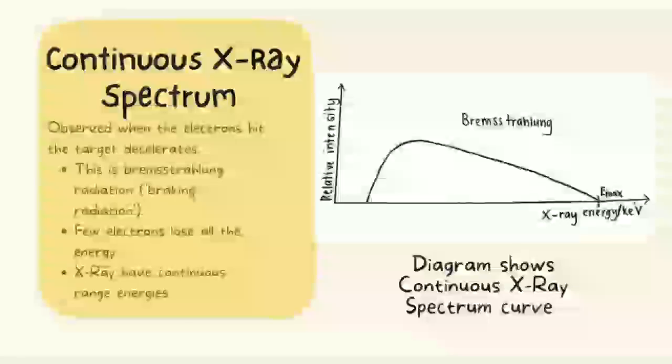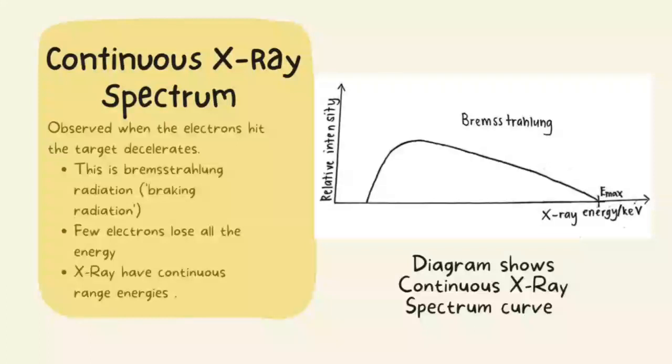The continuous X-ray spectrum refers to Bremsstrahlung radiation observed when electrons hitting the metal target decelerate. It is also known as braking radiation. As high-energy electrons approach the nucleus of a heavy metal, few electrons could come very close to the nucleus and lose a lot of energy, or pass far from the nucleus and give up relatively little energy.